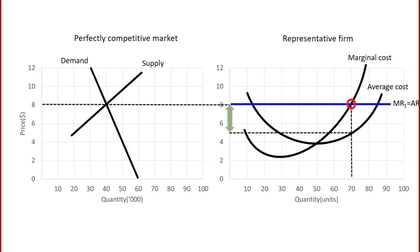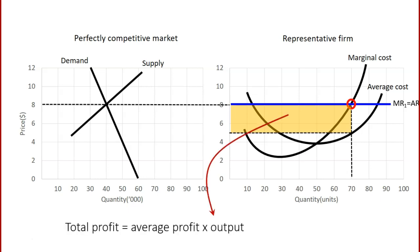To find the total profit, it's just the profit per unit — which is $3 — multiplied by the number of units, 70. The profit area is given by the yellow rectangle on the graph. The total profit is $3 times 70 units, which equals $210 profit.